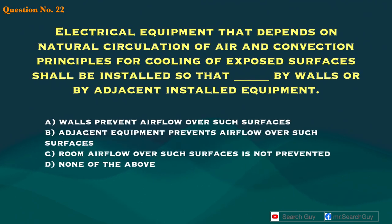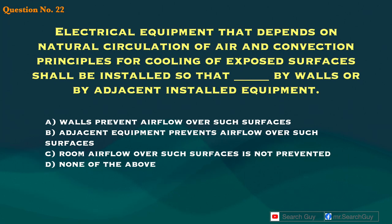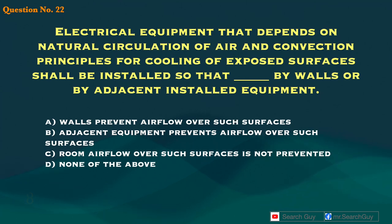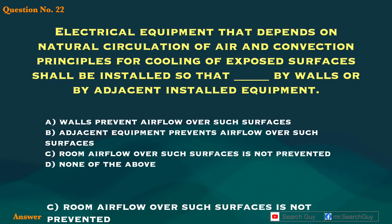Question 22. Electrical equipment that depends on natural circulation of air and convection principles for cooling of exposed surfaces shall be installed so that blank by walls or by adjacent installed equipment. A. Walls prevent airflow over such surfaces. B. Adjacent equipment prevents airflow over such surfaces. C. Room airflow over such surfaces is not prevented. D. None of the above. Answer: C. Room airflow over such surfaces is not prevented.